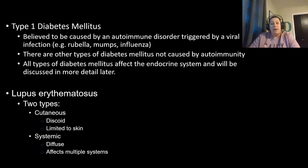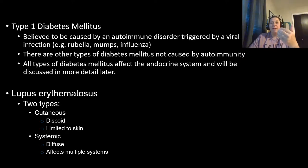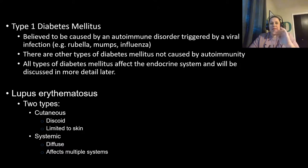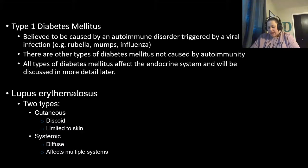Type 1 diabetes mellitus is believed to be caused by an autoimmune disorder, potentially triggered by a viral infection like rubella, mumps, or influenza — even in utero. This is why it's called juvenile diabetes and is normally diagnosed very early. The immune system alters the beta cells in the pancreas that produce insulin, hindering them so they can no longer produce insulin properly, triggering this type of diabetes. Type 2 diabetes is not an autoimmune disorder. All types of diabetes mellitus will be covered more in the endocrine system chapter.